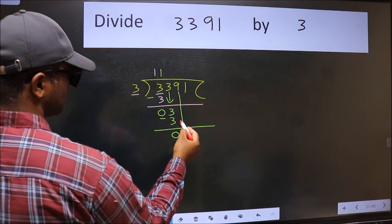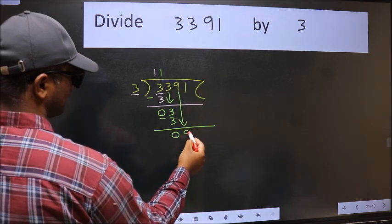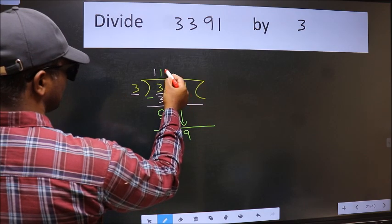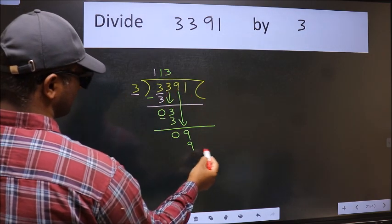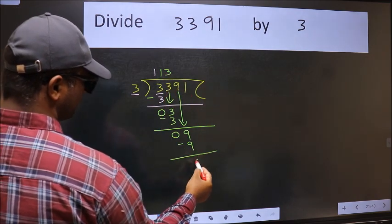After this, bring down the beside number. So 9 down. When do we get 9 in 3 table? 3 threes 9. Now we should subtract. We get 0.